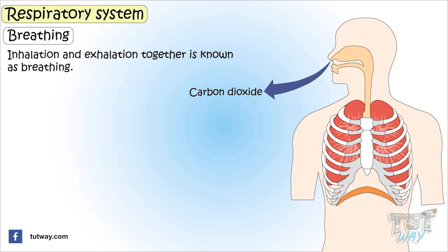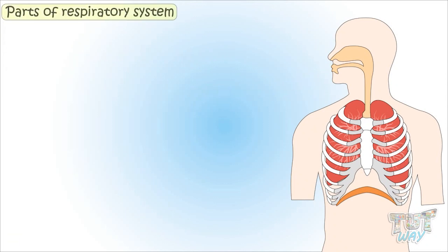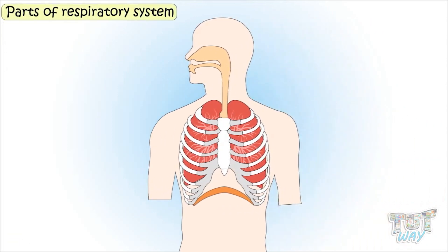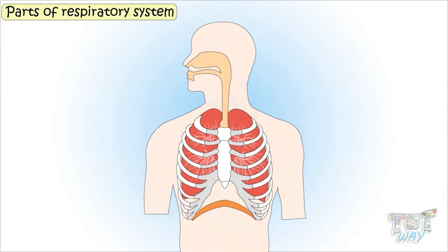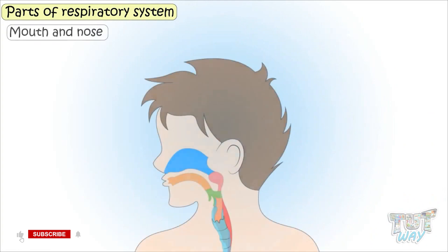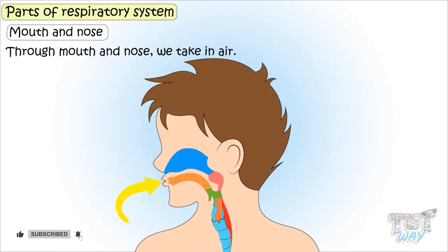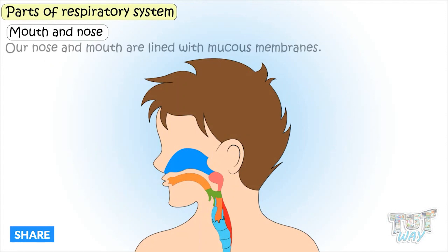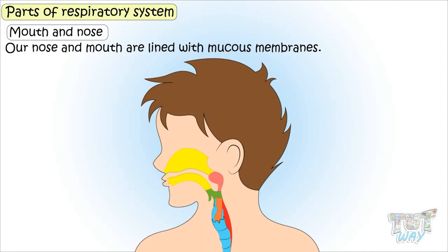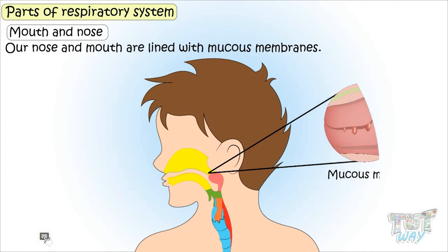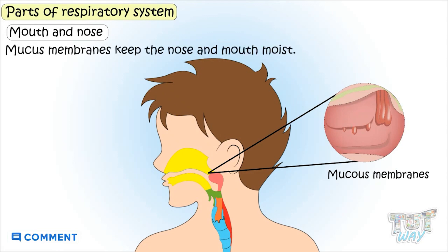Now let's learn the parts of the respiratory system. Mouth and nose: Through the mouth and nose we take in air. Our nose and mouth are lined with mucous membranes that keep them moist.